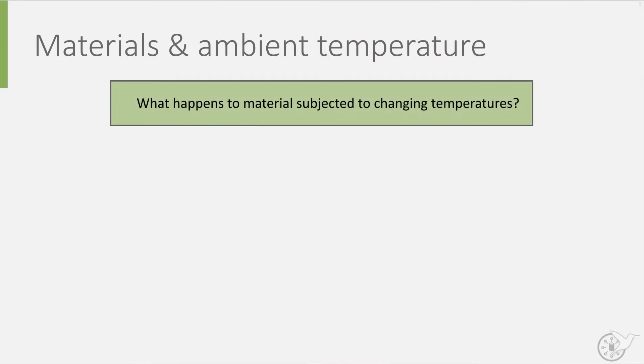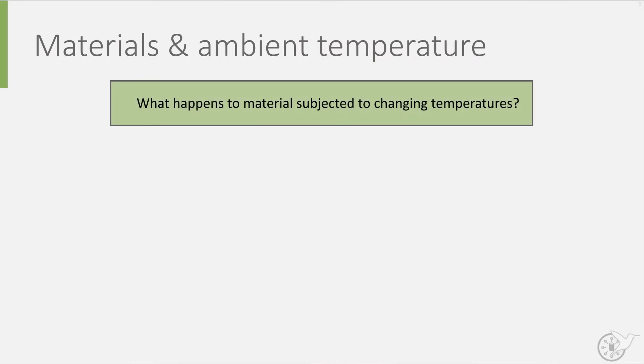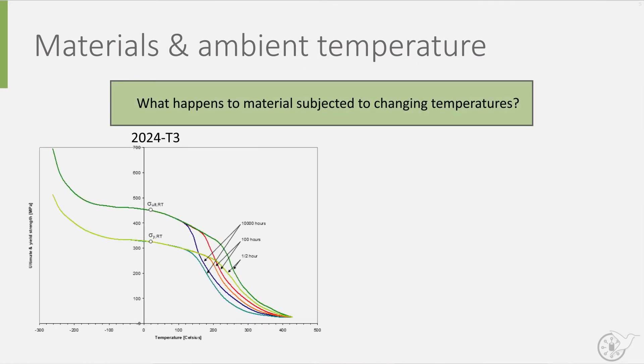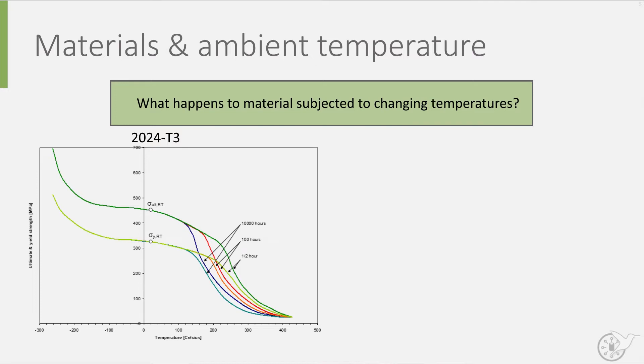What happens to material properties if a material is subjected to a change in temperature? If we look at this graph, which shows the variations in ultimate and yield stress of aircraft-grade aluminum as a function of temperature, you can see that the ultimate and yield stress become lower as the temperature increases.